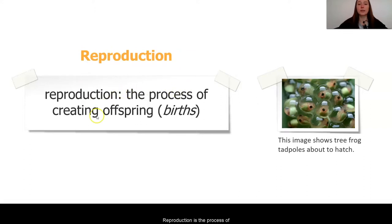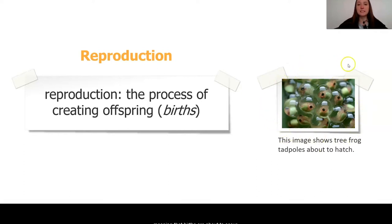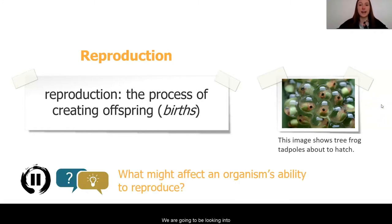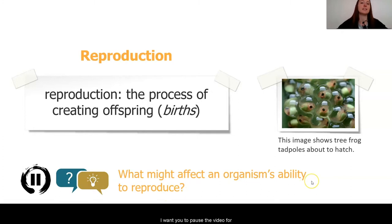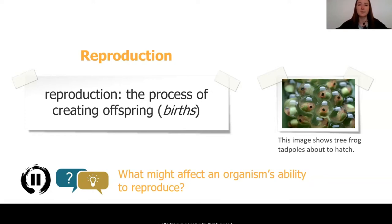What we're talking about here is the process of reproduction — creating offspring, or the process of having new births in a population. We can see some new tadpoles about to hatch, meaning that births are about to occur. We are going to look into reproduction today and think about what might affect an organism's ability to reproduce. Pause the video and think about what might cause an organism to reproduce more or less in a certain period of time.